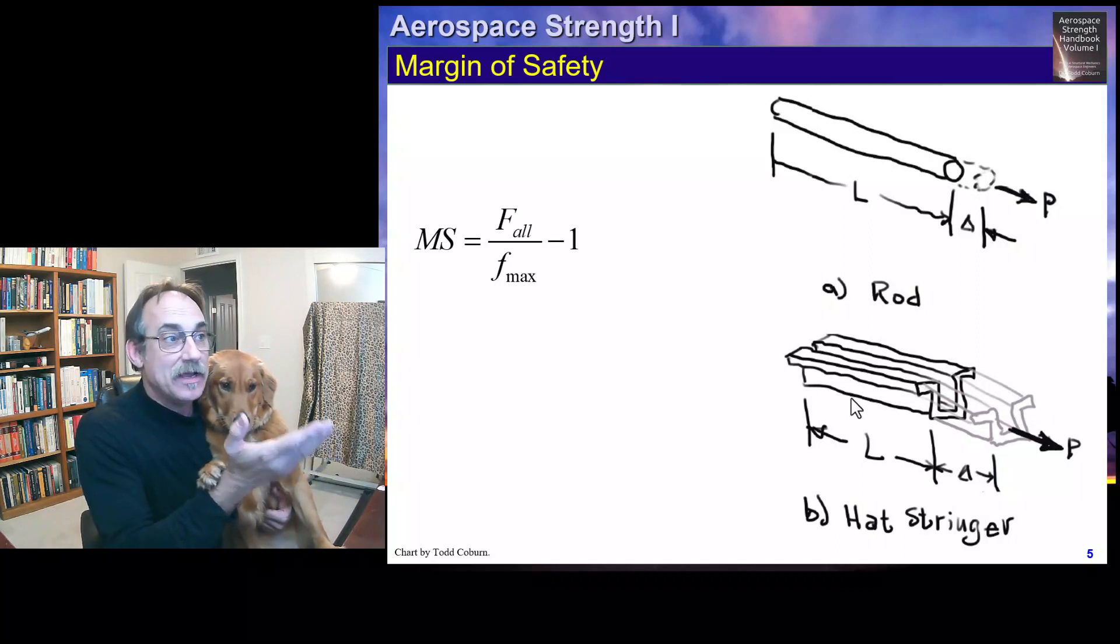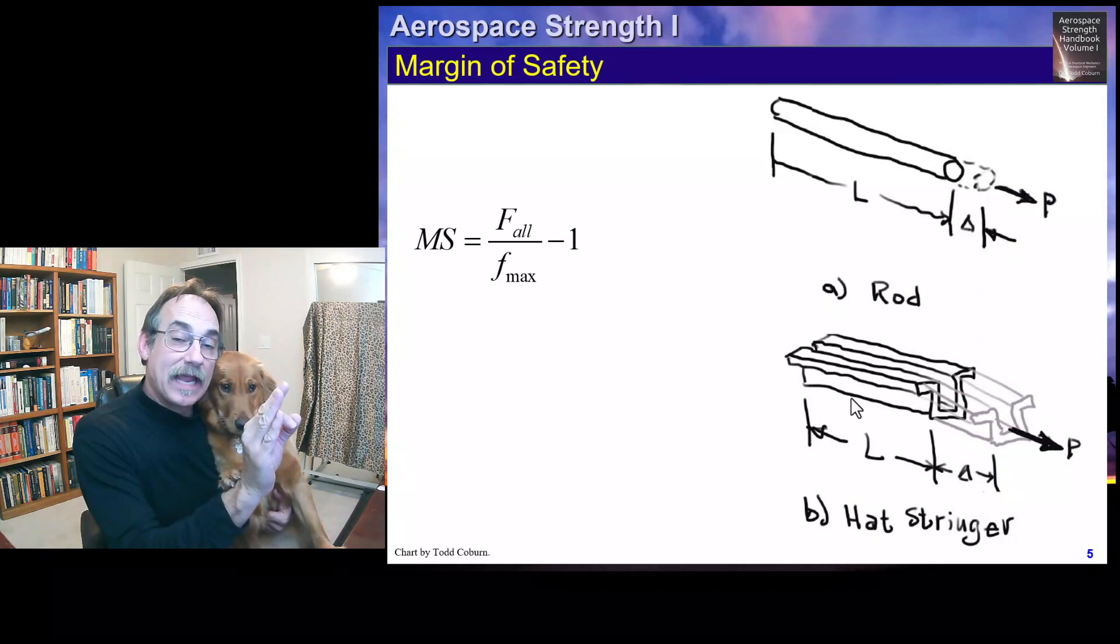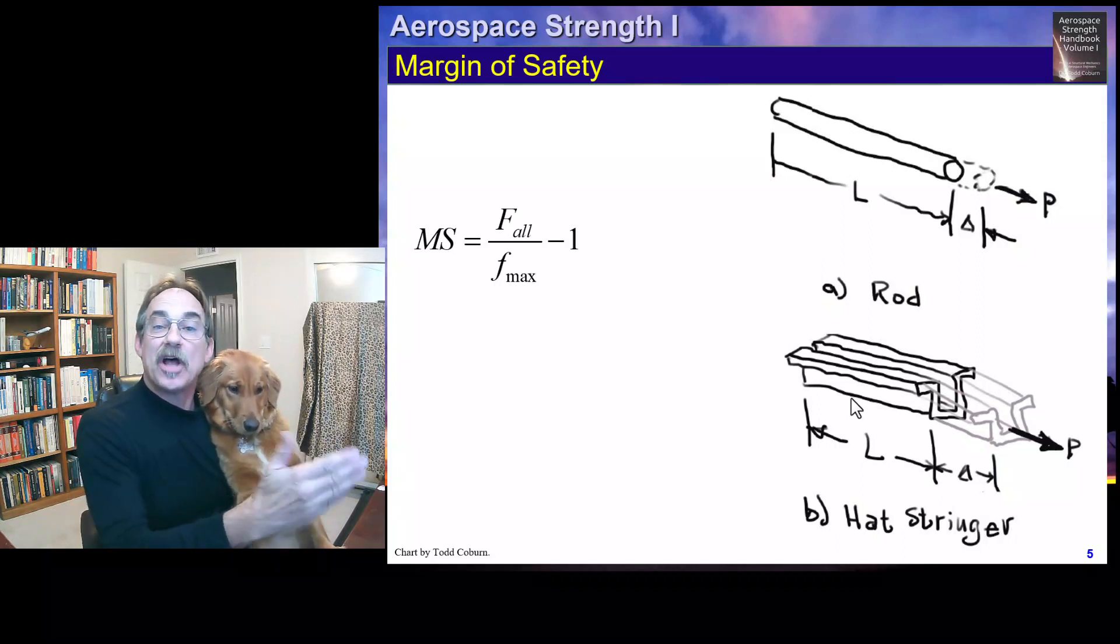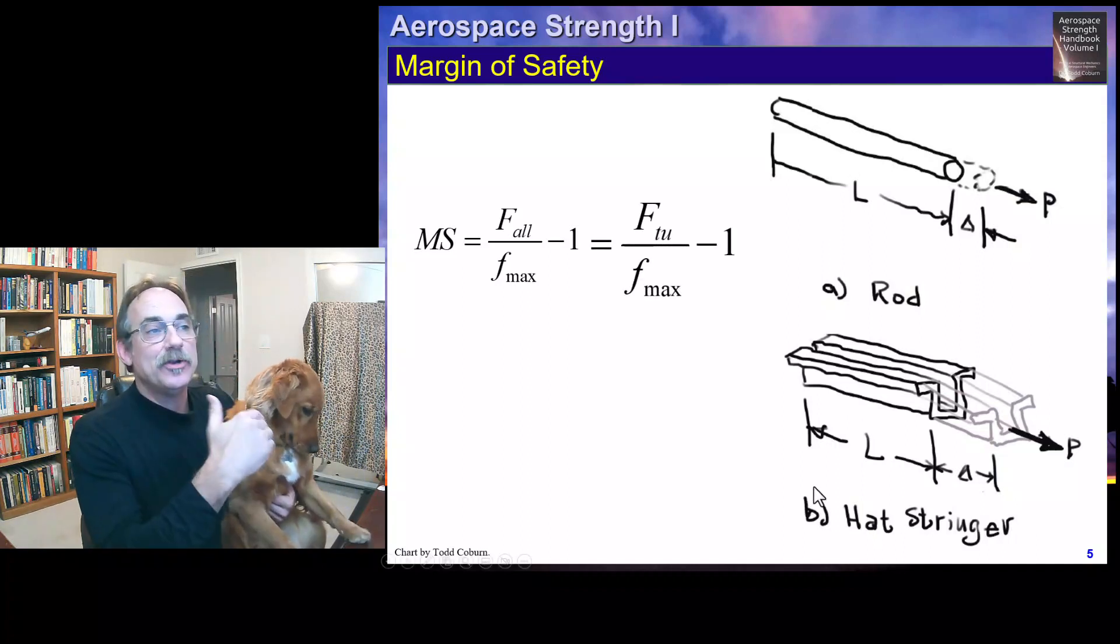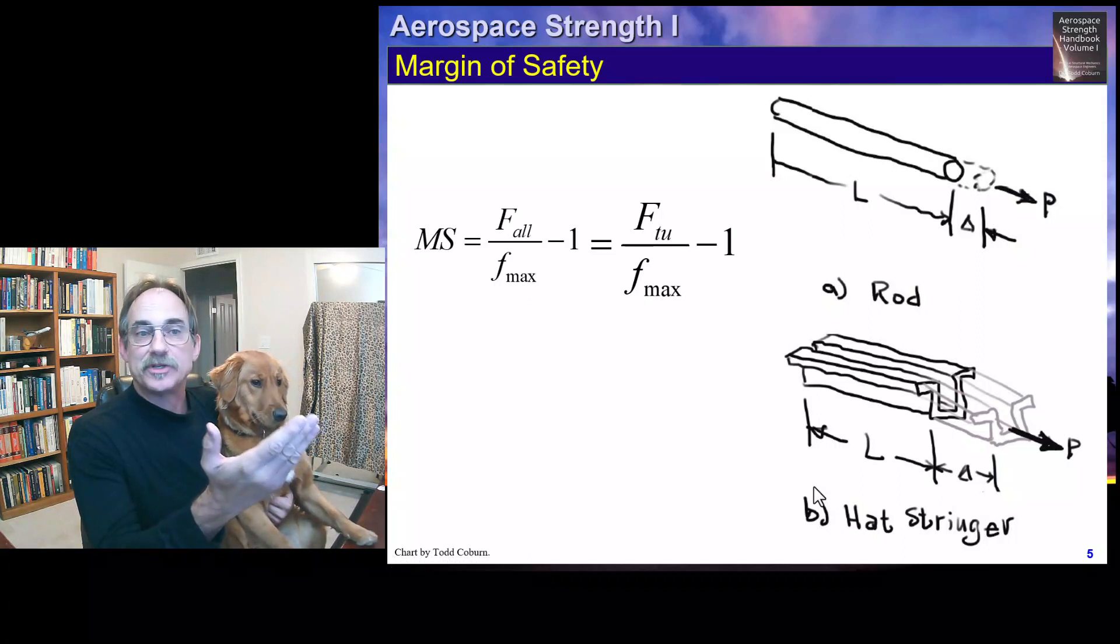In aerospace, lowercase f means calculated stress and uppercase F means allowable stress. If we're talking about an axial load, typically we're comparing this to F_TU, so it'd be F_TU over the maximum stress minus one. Those are the formulas you need to know after lecture one.